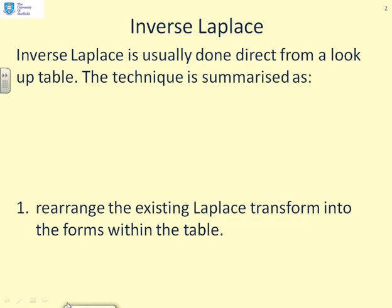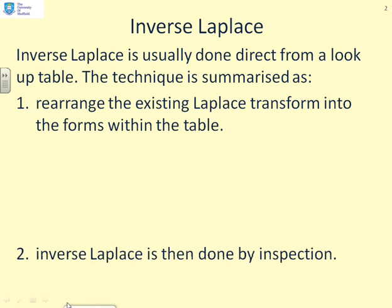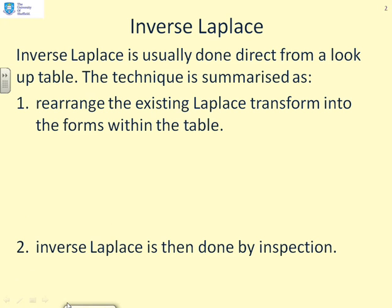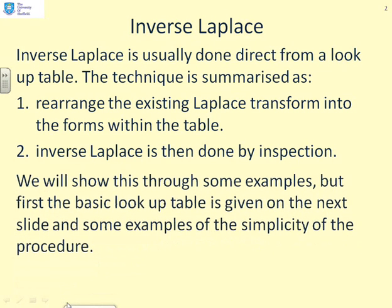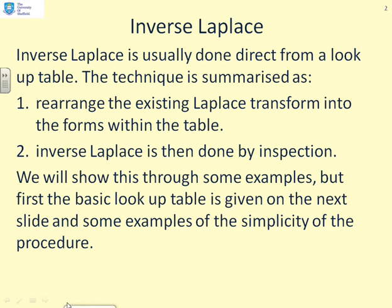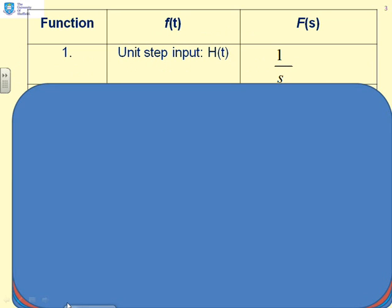First, you rearrange the existing Laplace transform into forms which are in the table already. Once you've done that, inverse Laplace is done by inspection because you simply match the form to something in the table. We're going to use some examples to show how this is done.